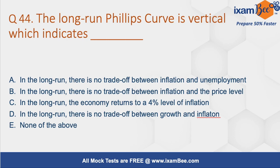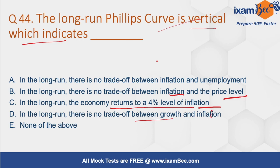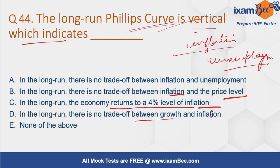Question number 44: The long-run Phillips curve is vertical — what does that indicate? The Phillips curve shows the relationship between inflation and the unemployment rate. In the short run, it shows a trade-off: to have more people employed, the economy must bear some inflation. But if the Phillips curve is vertical in the long run, it means there is no trade-off between inflation and unemployment.